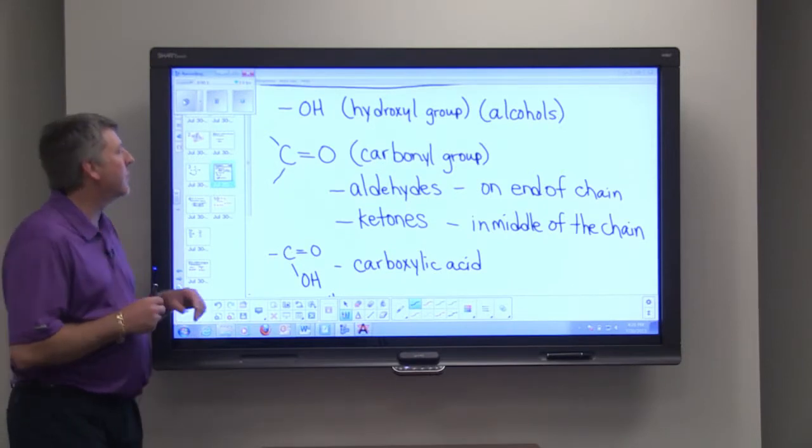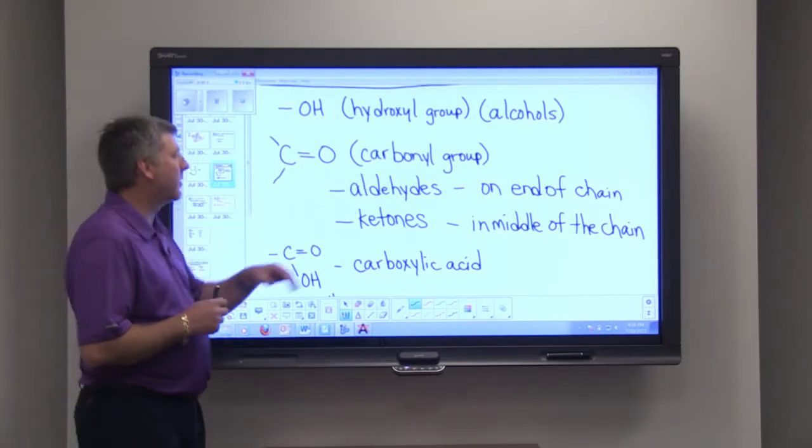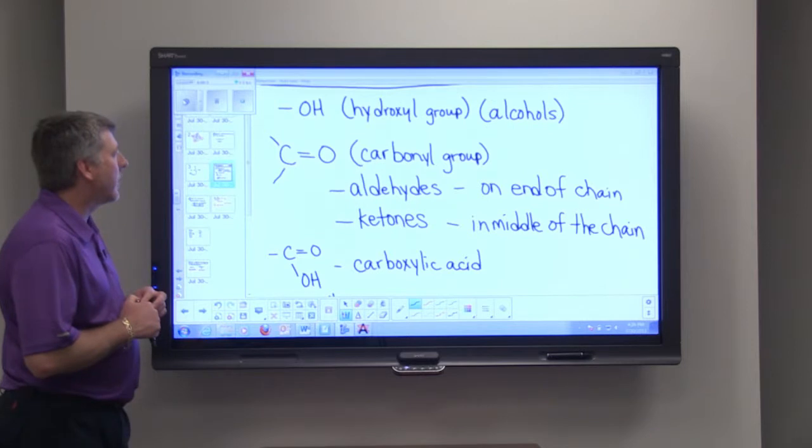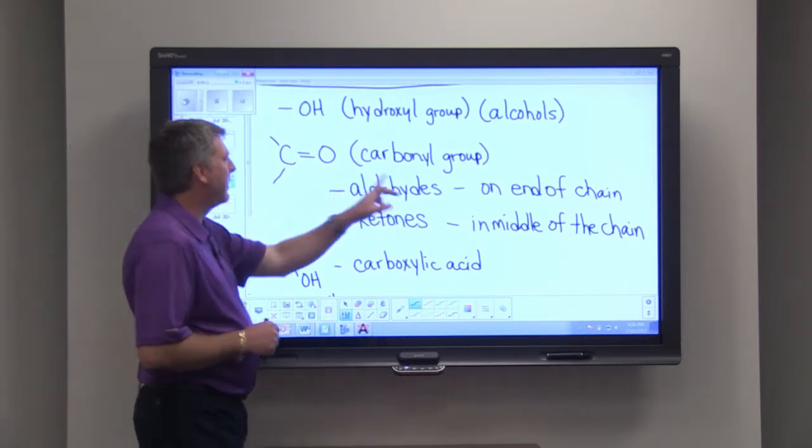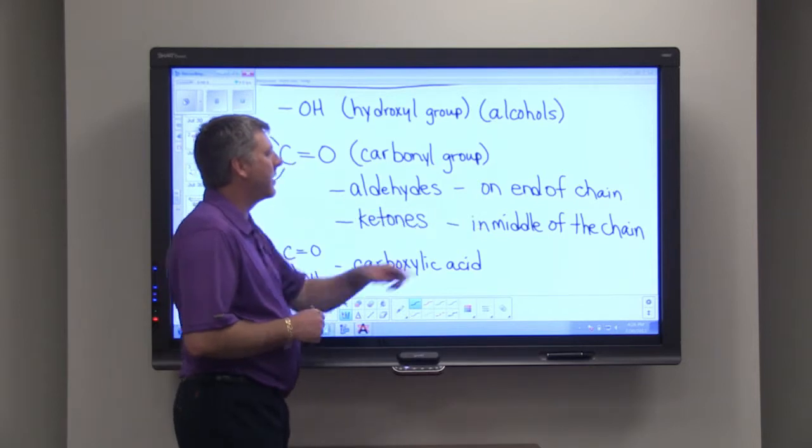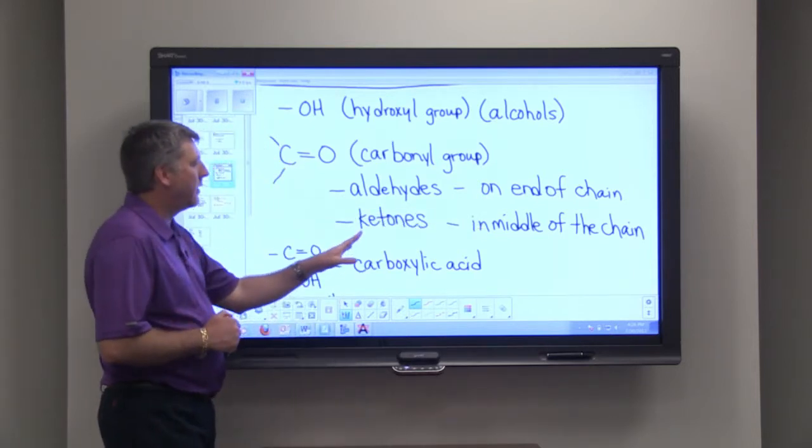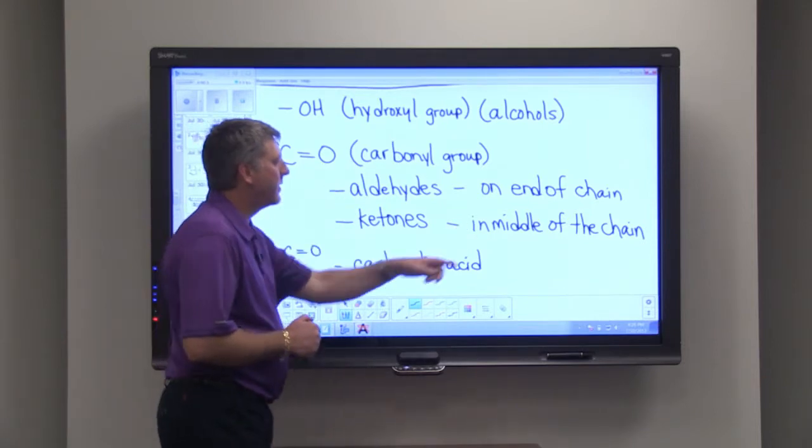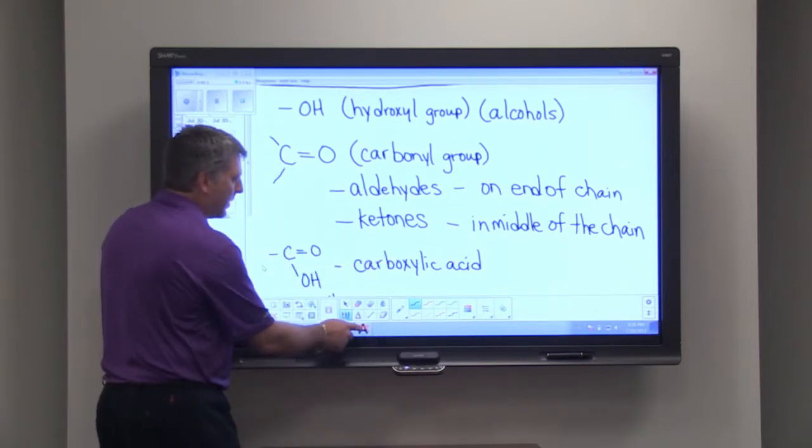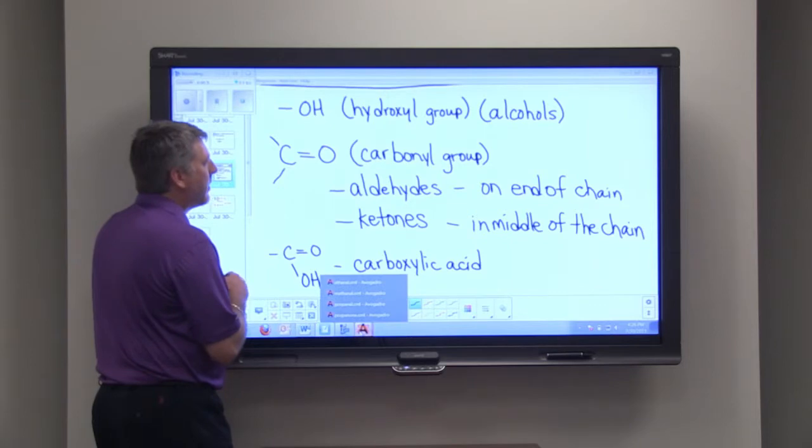So our next functional group is the carbonyl group, and with carbonyl groups we can have two families: aldehydes if the double bonded oxygen is on the end of the chain, and then something called ketones if the double bonded oxygen is in the middle of the chain. So let's look at some aldehydes and ketones.